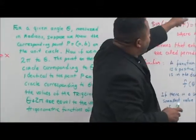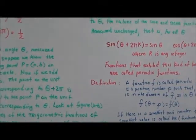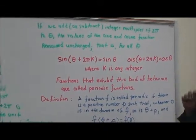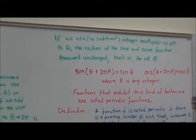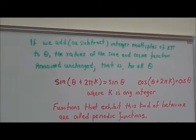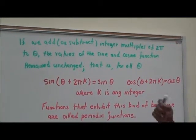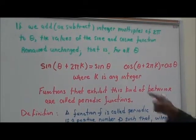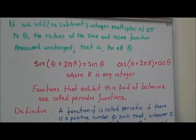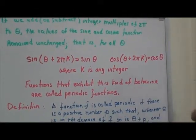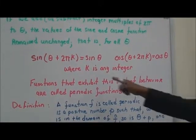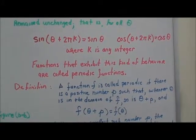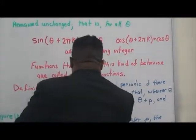If we add or subtract any integer multiple of 2 pi to theta, the values of the sine and cosine functions remain unchanged. That is, for all theta: sine of (theta + 2πk) equals sine theta, and cosine of (theta + 2πk) equals cosine theta, where k is any integer. Functions that exhibit this kind of behavior are called periodic functions.